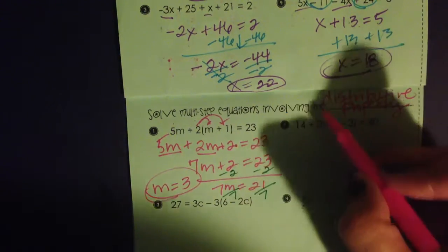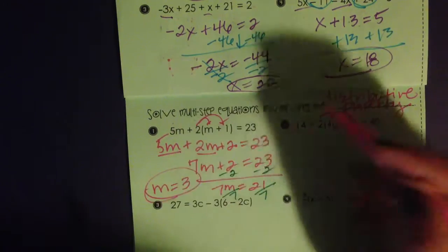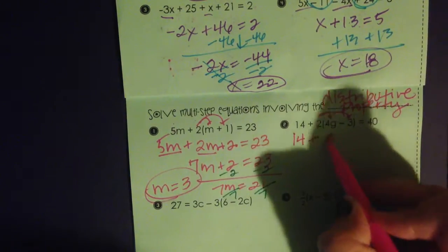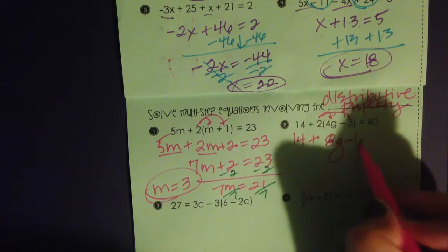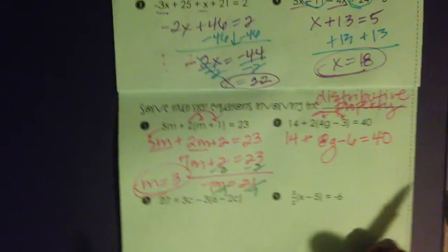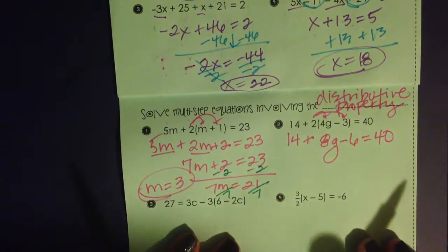Number 2, if I want to distribute my 2, I'm going to wind up with 14 plus 8g minus 6 equals 40. Would you bring me a calculator and turn this light on in here? I got shadows in my video. Sorry.